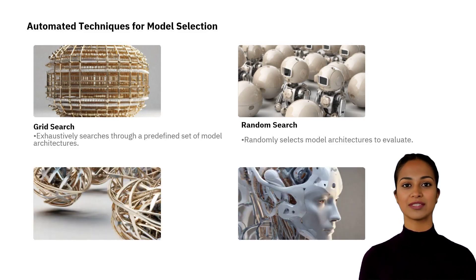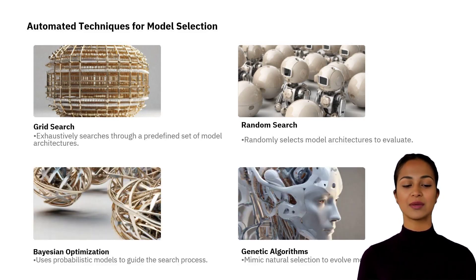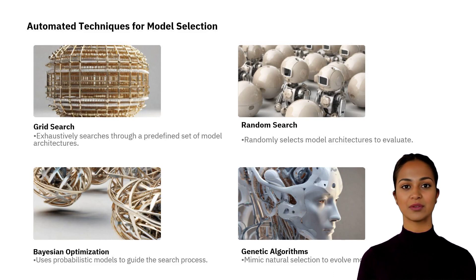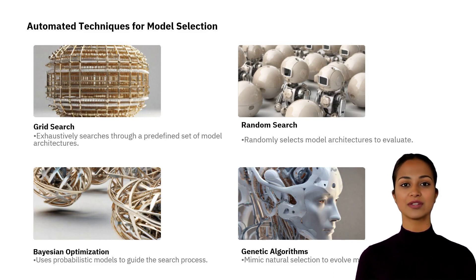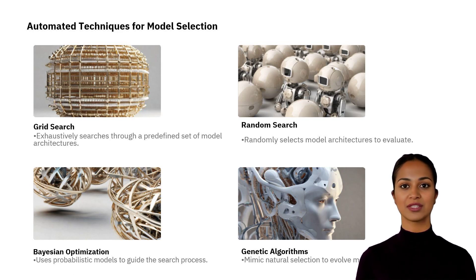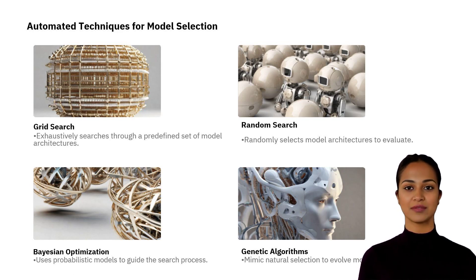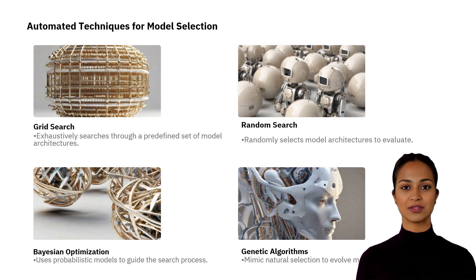Model Selection is one of the most essential steps in AutoML. Grid Search is an approach that tests all the possible model architectures defined in advance, while Random Search randomly chooses which model architectures to evaluate. Both of these techniques are useful in the model selection process of AutoML.